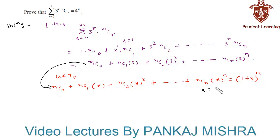Here we have X equal to 3, therefore its value is equal to (1+3)^N which is equal to 4^N, and this is nothing but the RHS of the given equation.